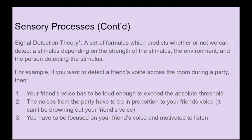We also should talk about signal detection theory, which is a set of formulas that predicts whether we can detect a stimulus depending on the strength of the stimulus, the environment, and the person detecting it. For example, to detect a friend's voice across a party, three things must happen: your friend's voice must be loud enough to exceed the absolute threshold, the party noise must not drown out your friend's voice, and you must be focused and motivated to listen.